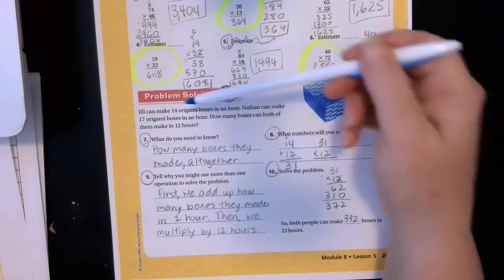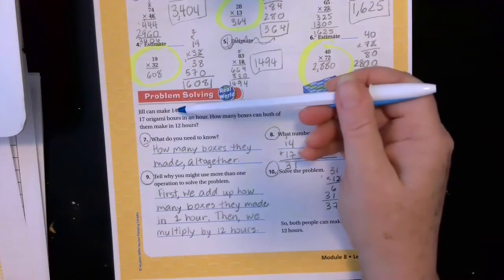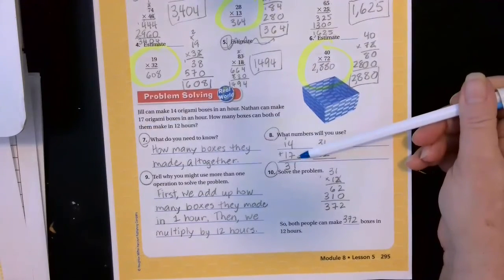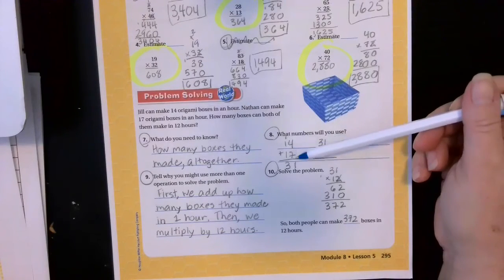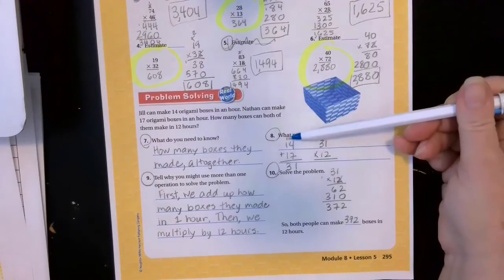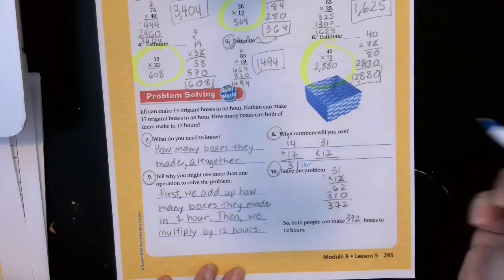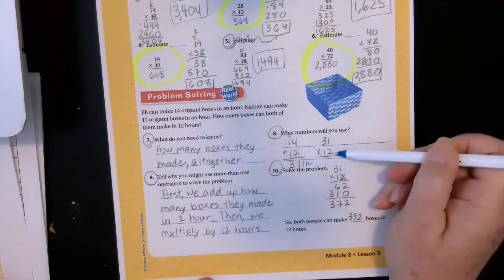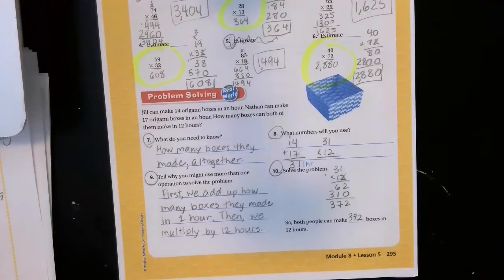So number 7, what do you need to know? How many boxes they made all together? That's the ultimate question. So going on to number eight, what numbers will I use? Well, first we're going to multiply. Jill can make 14 in an hour and he can make 17 in an hour. So we added up how many boxes the two of them could make in just one hour. We did it so we only had one extra step instead of two extra steps. So we added them together. Four plus seven was 11, put down my one, carry my one. One plus one is two plus one is three. So 31 in one hour. But then they're asking how many can they both make in 12 hours? So we multiplied this number by 12.